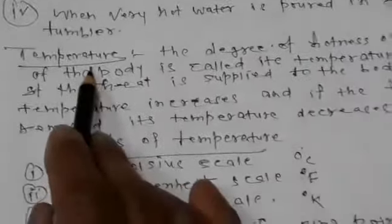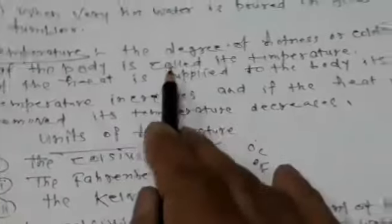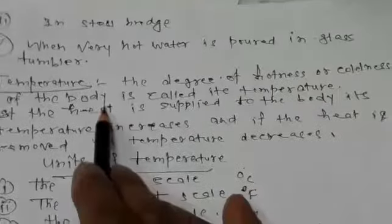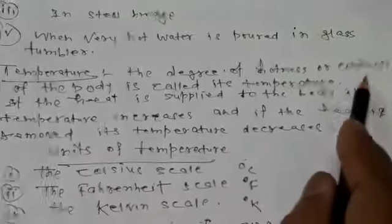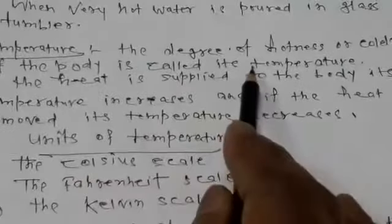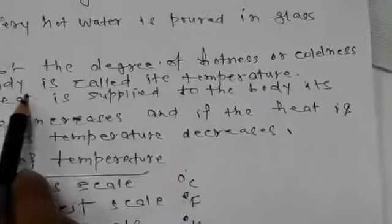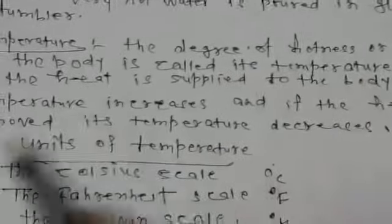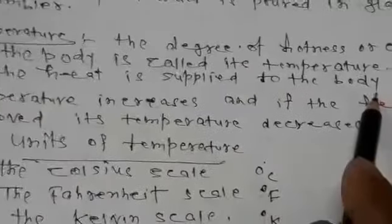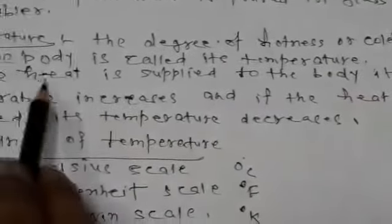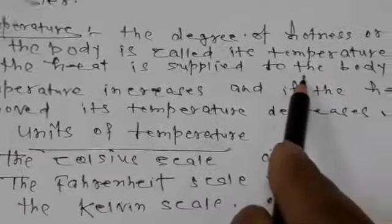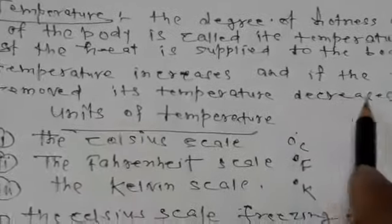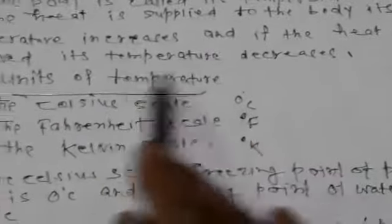The next part is temperature. What is temperature? The degree of hotness or coldness of a body is called temperature. If heat is supplied to the body, the temperature increases. When heat is removed, the temperature decreases.